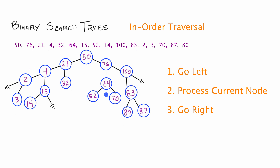We're going to create a print function that uses an in-order traversal to print the key values inside our binary search tree from lowest to highest key. The first thing we want to do is start at our root and apply step one — go left. So we draw an arrow indicating that we have moved to our root node's left child. Now we're on node 21. For node 21, we do task one: go left. Task one sends us to node 4. Now at node 4, step one tells us to traverse down node 4's left pointer.